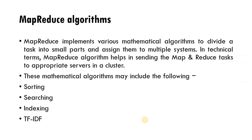MapReduce algorithms are of four types: sorting, searching, indexing, and TF-IDF. MapReduce implements various mathematical algorithms to divide a task into small parts and assign them to multiple systems. In technical terms, it helps in sending map and reduce tasks to appropriate servers in a cluster. The big bulky program is divided into multiple tasks running on different computers, all connected to one main server. The small tasks run in parallel and at the end all outputs are merged on the server.